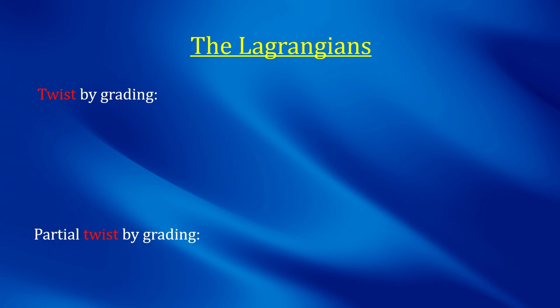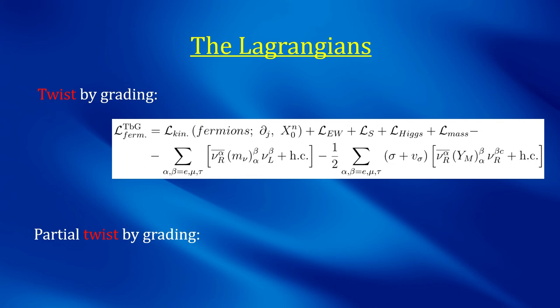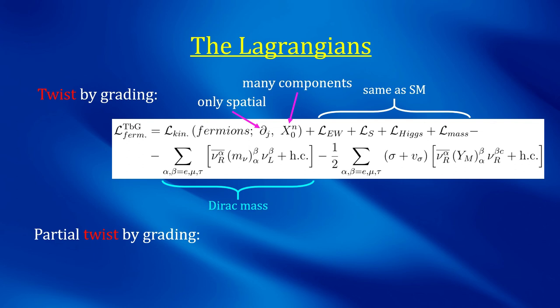And so, here are the Lagrangians. In the twist-by-grading case, the Lagrangian looks like this. The first row is just like the standard model, with the only difference being in the kinetic terms, as we said. The derivatives only cover the spatial directions, and x0 takes care of the time direction. Of course, there are many independent components of x0. We couldn't possibly identify the same thing as the time derivative of all fermions at the same time, after all. The second line contains the new stuff, a Dirac mass for the neutrinos, and their coupling with the new scalar sigma, whose VEV gives rise to Majorana mass.